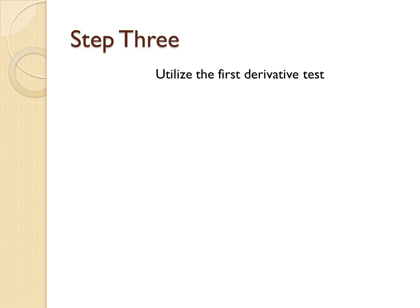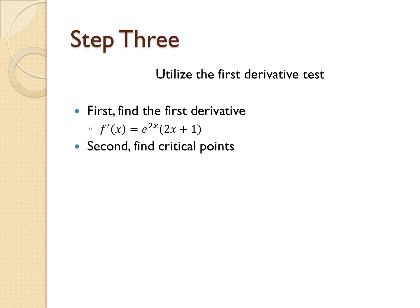For step 3, we utilize the first derivative test. The first derivative is f'(x) = e^(2x)(2x + 1). We need to find our critical points by finding where f'(x) is either 0 or does not exist. Since f'(x) is defined over all real numbers, the only critical number occurs when we set 2x + 1 equal to 0, giving us x = -1/2.